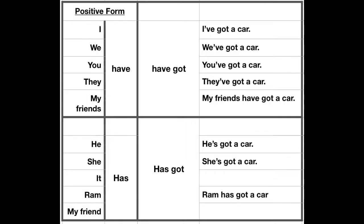These are the positive sentences. I have got, we have got, you have got, they have got, my friends have got a car or my friends have a car. And for third person singular — he, she, it, or my friend, or Ram — has a car, or has got a car.